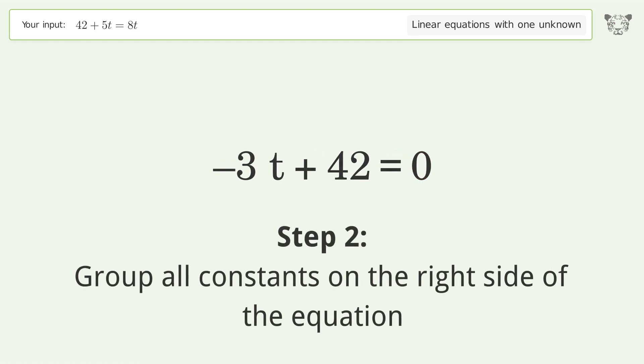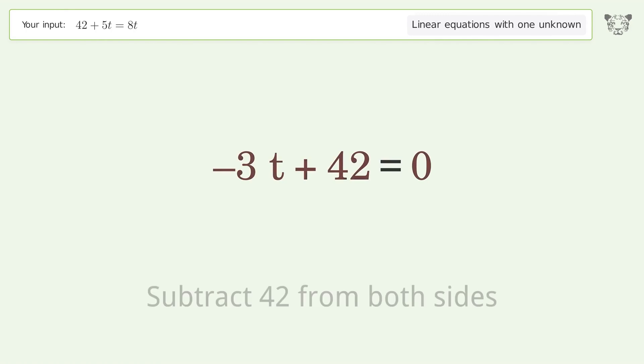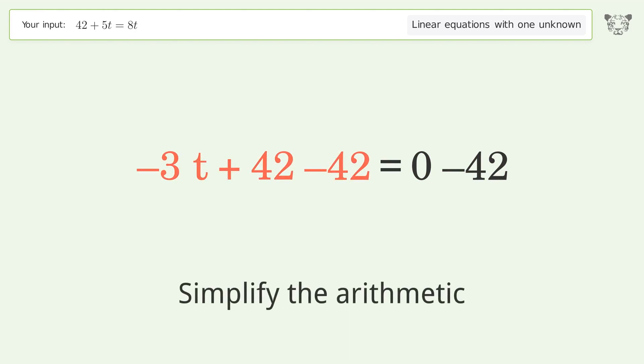Group all constants on the right side of the equation. Subtract 42 from both sides. Simplify the arithmetic.